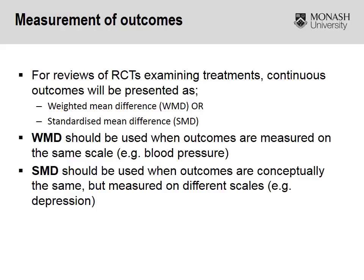For continuous outcomes, the result is presented as a difference between means. There are two types: a weighted mean difference, used when outcomes across studies are all measured on the same scale — blood pressure is a classic example — and a standardized mean difference, used when outcomes are conceptually the same but measured on different scales, such as pain or depression, which can then be standardized so results are illustrated on the same scale.